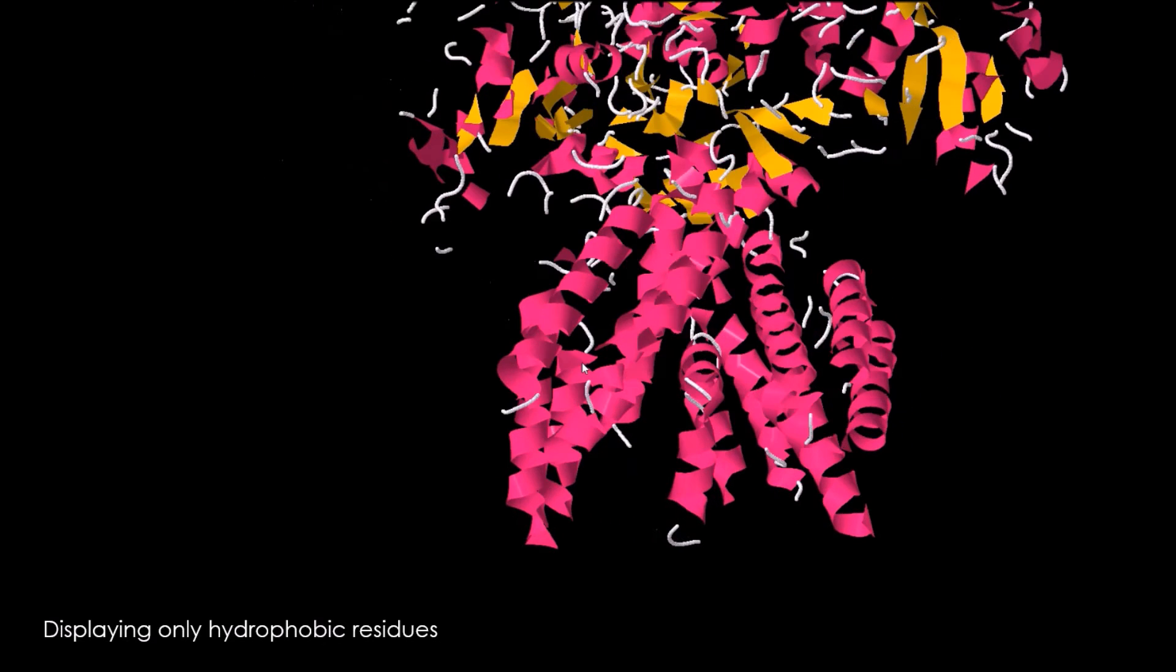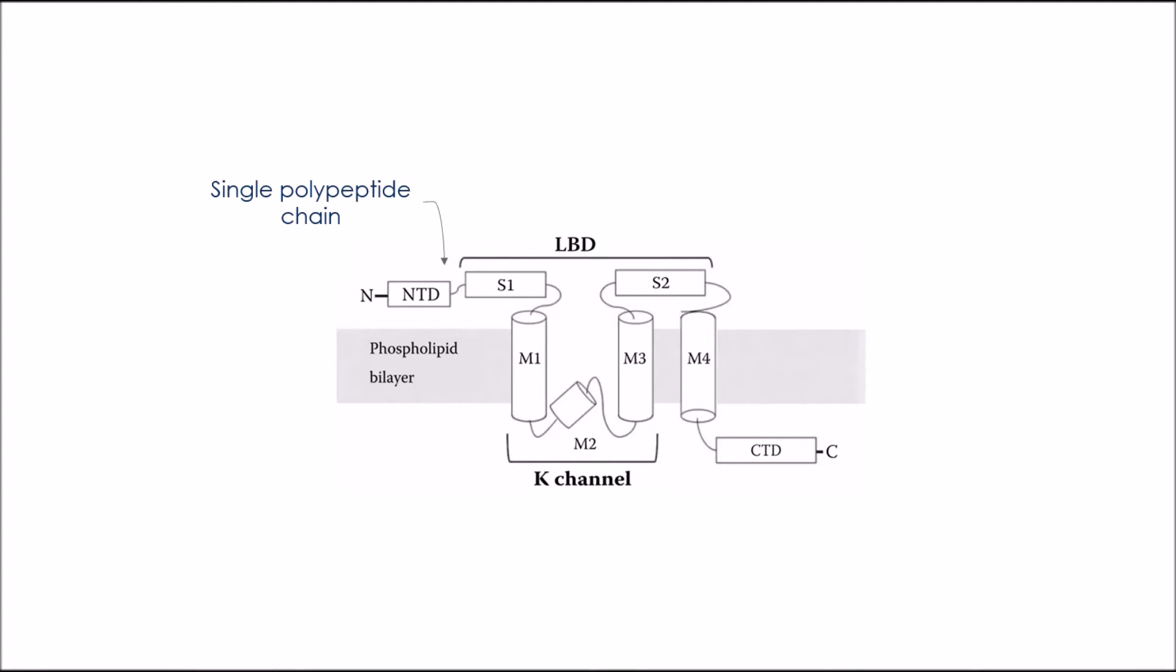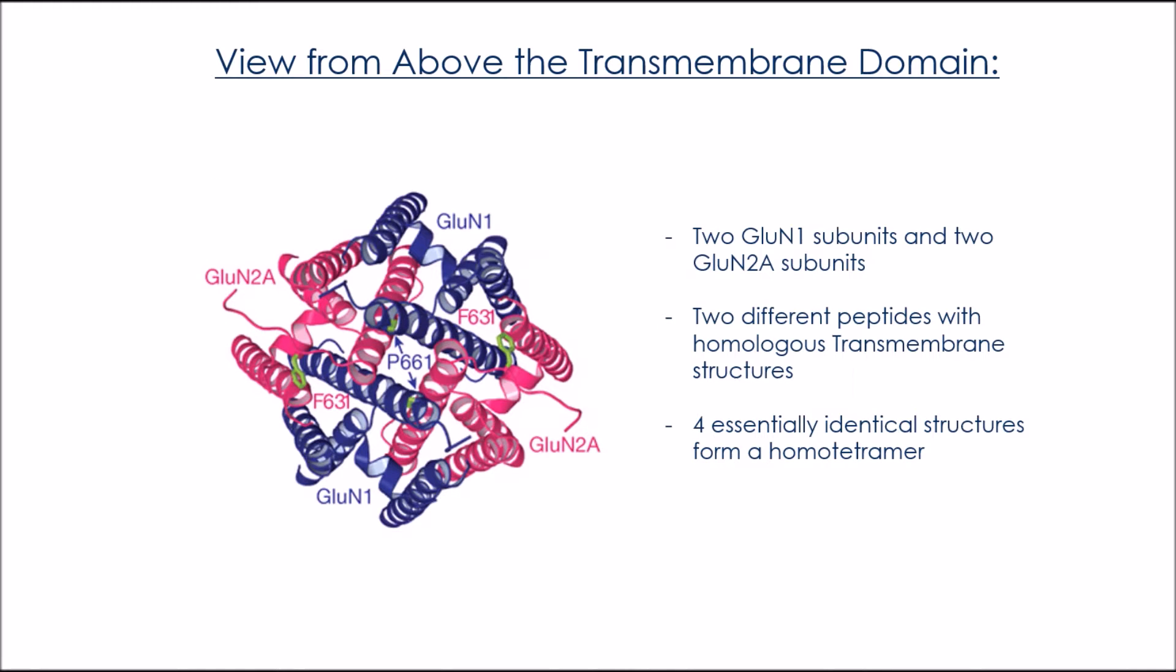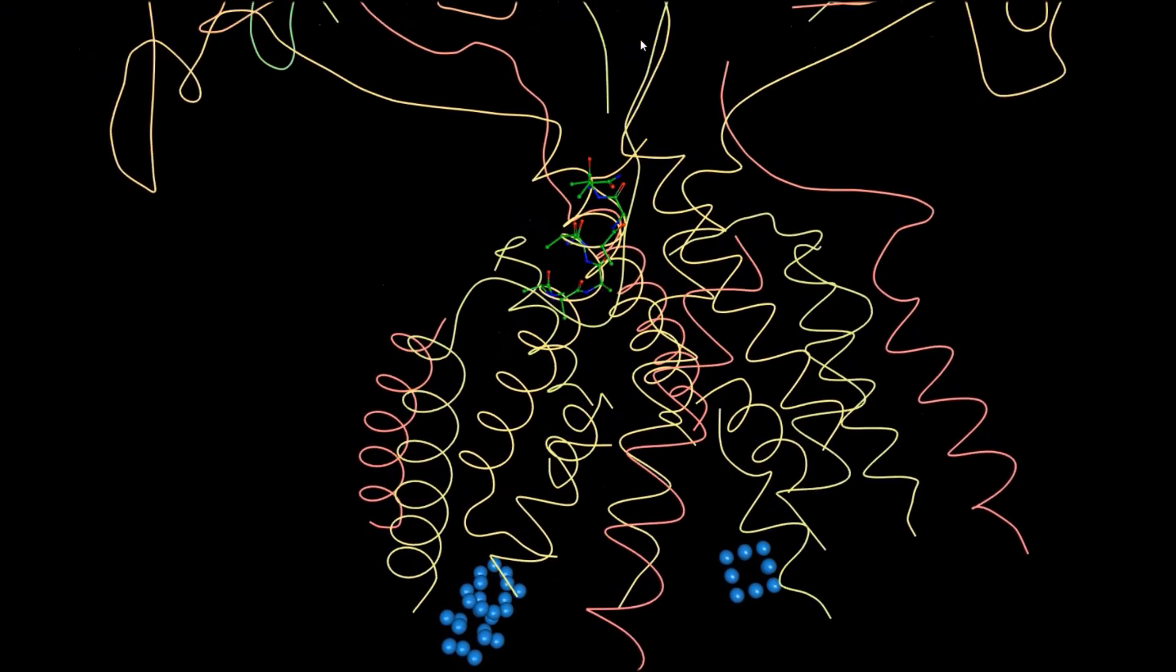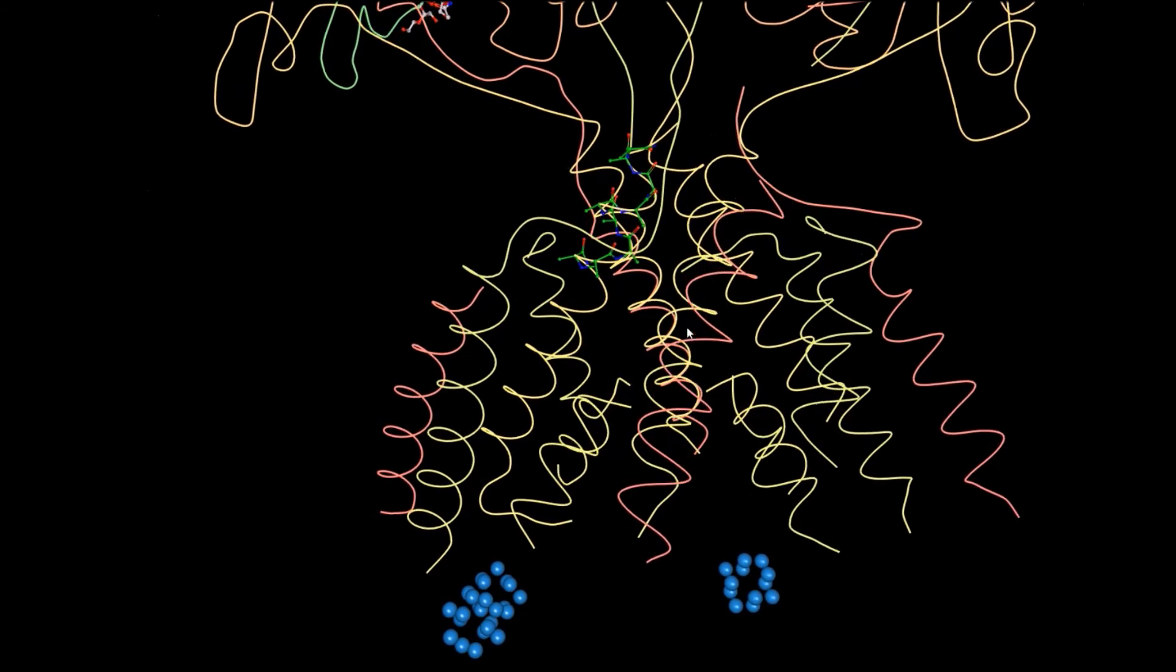This domain shows type 3 and type 4 character because each subunit traverses the membrane a series of times, but the four protein subunits form a homotetramer, as found in type 4 transmembrane proteins. The M3 segment of each receptor subunit forms the ion channel by experiencing pseudo-four-fold symmetrical interactions.